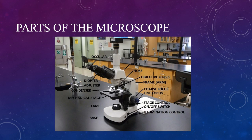Let's look at the different parts of the microscope. This particular microscope is trinocular because it has three ocular tubes. Though the center tube is usually set up with a camera, it can also be fitted with an ocular lens or eyepiece.